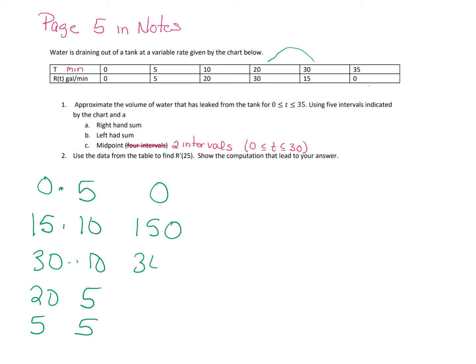And I think I did that right. So that's 0, 150, 300, 100 and 25. So adding all of these up would give us our answer. I think it's 575 if my math is correct. So that would be a right-hand approximation.